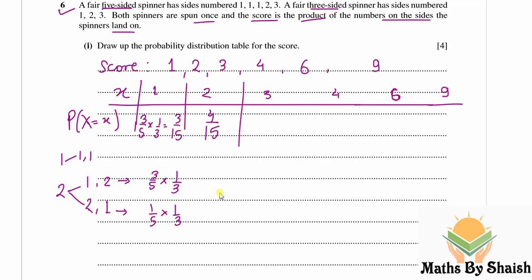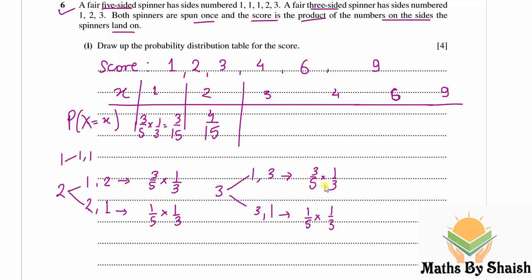For X=3, the product is 3 if the first spinner shows 1 and the second shows 3, or the first shows 3 and the second shows 1. That gives 3/5 × 1/3 = 3/15, plus 1/5 × 1/3 = 1/15. So P(X=3) = 3/15 + 1/15 = 4/15.